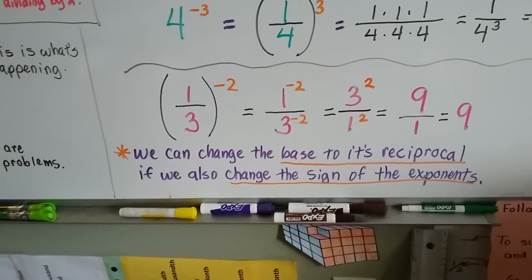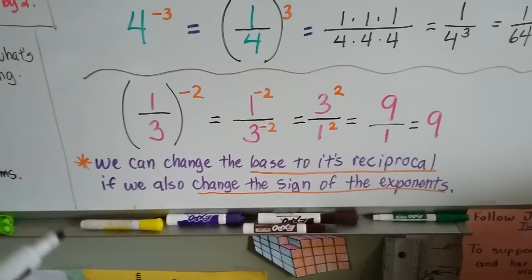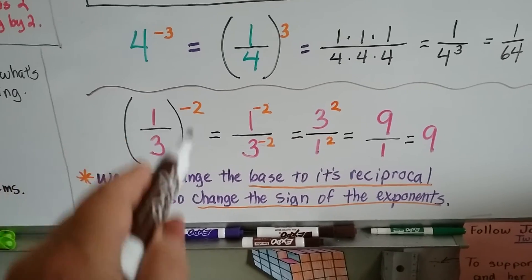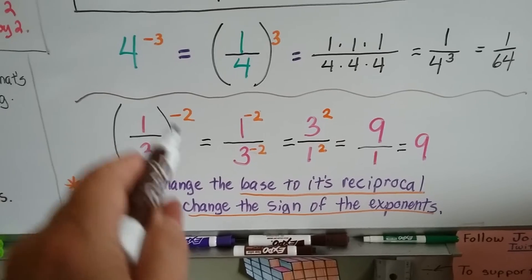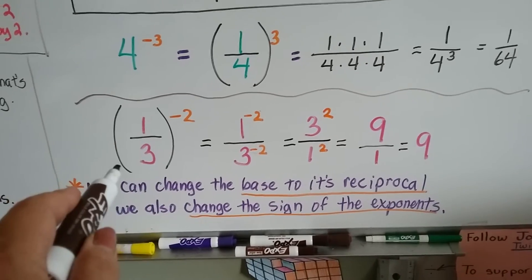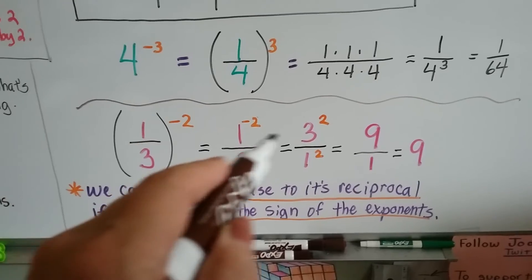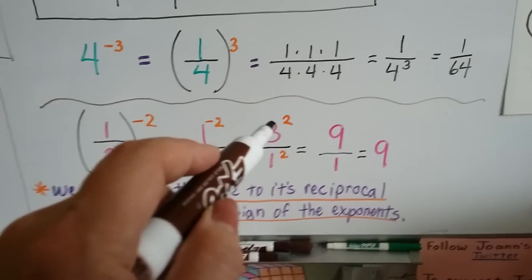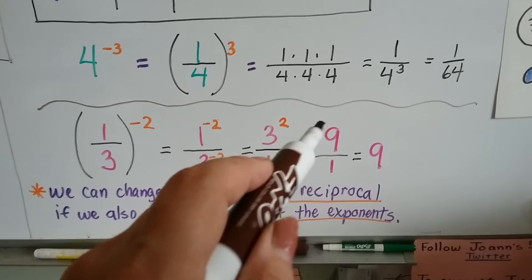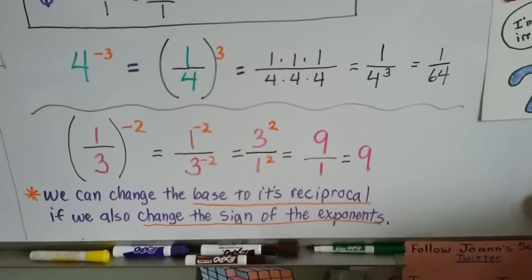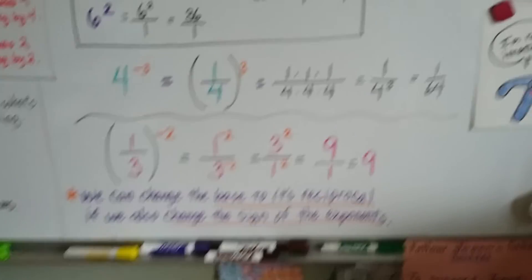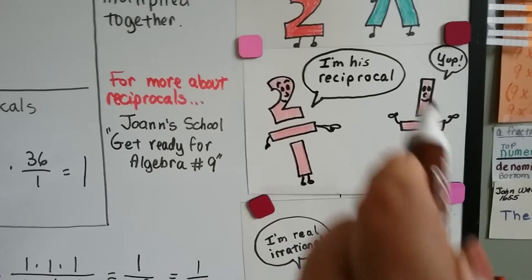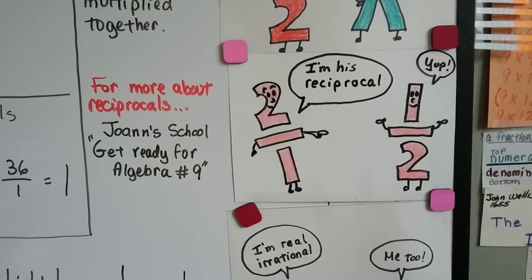We can change the base to its reciprocal if we also change the sign of the exponent. So if we've got a negative 2, we can make it a positive 2 if we flip this around to its reciprocal. The reciprocal of 1 third is 3 over 1. Now we've got positive exponents, so we've got 3 times 3 over 1 times 1. 3 times 3 is 9, and 1 times 1 is 1, so we've got 9. The reciprocal is the flipped around, upside-down version of the fraction.